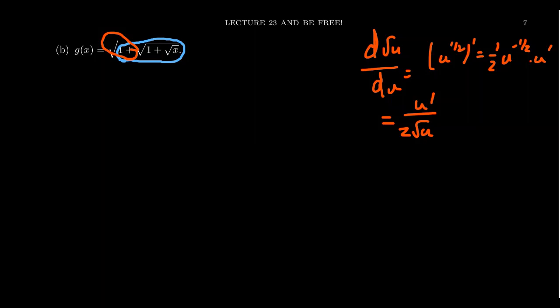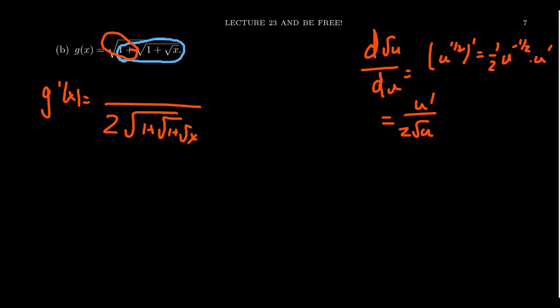Taking the derivative of g, since we're taking the square root, we get in the denominator 2 times the square root of (1 + √(1 + √x)). But then we need the inner derivative — we have to take the derivative of 1 + √(1 + √x). So we haven't done the numerator yet; we have to come back to it.